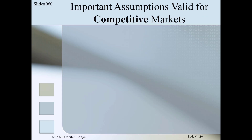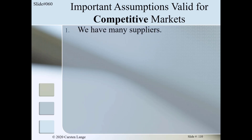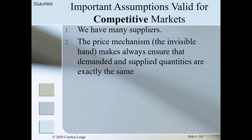The third and last topic deals with competitive markets. If we consider a competitive market we have to add some further assumptions. First, in a competitive market we have many suppliers; therefore, none of the suppliers has actual market power. Second, in a competitive market the price mechanism always ensures that demanded and supplied quantities are exactly the same. Since we don't know yet how the price mechanism works, we assume that an invisible hand always sets the price so that demanded quantity equals supplied quantity.